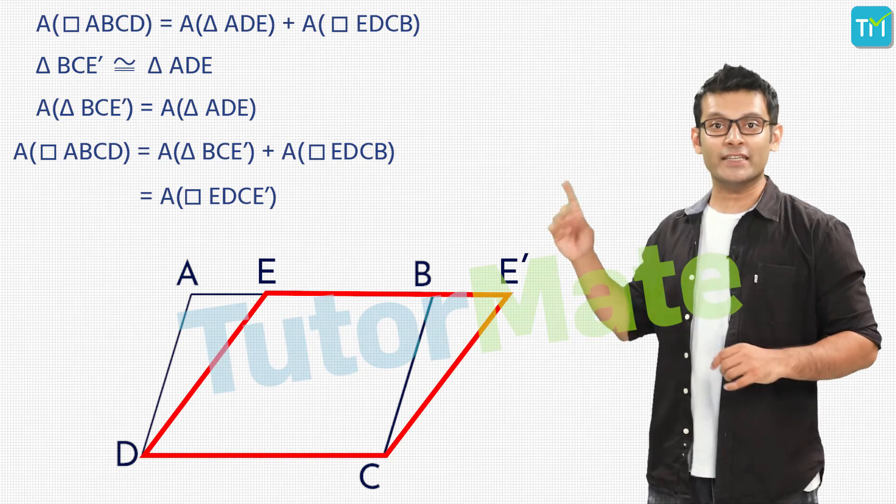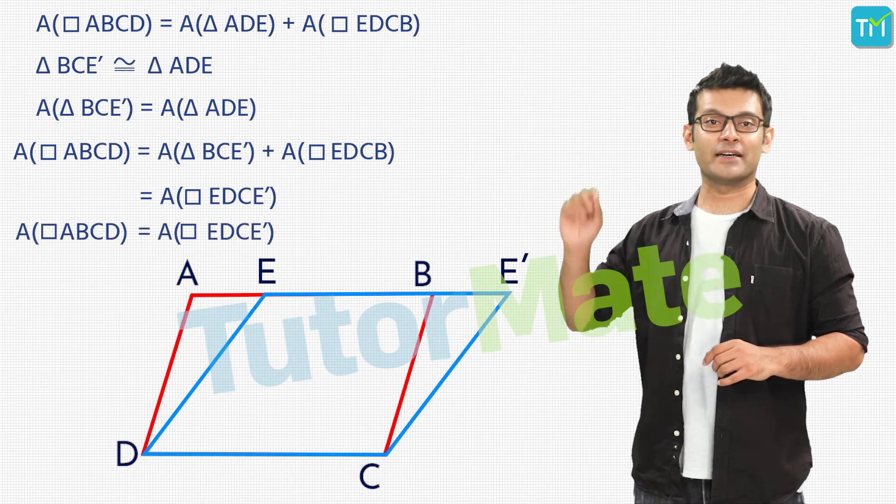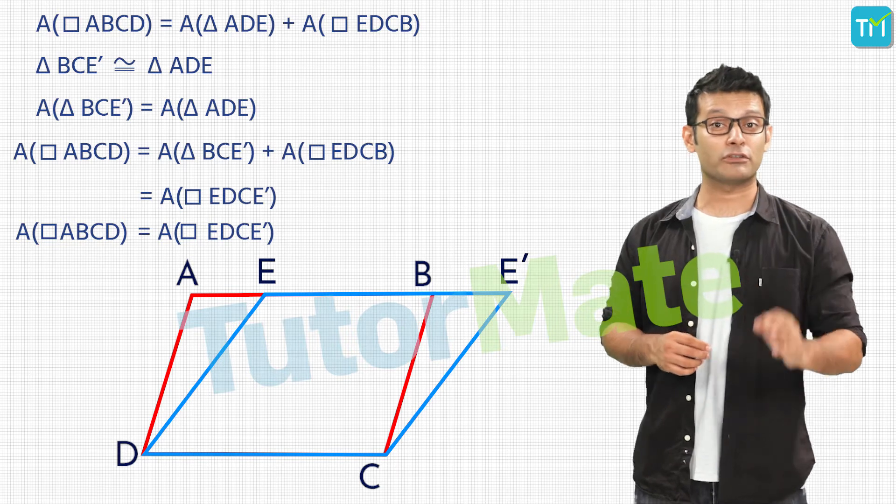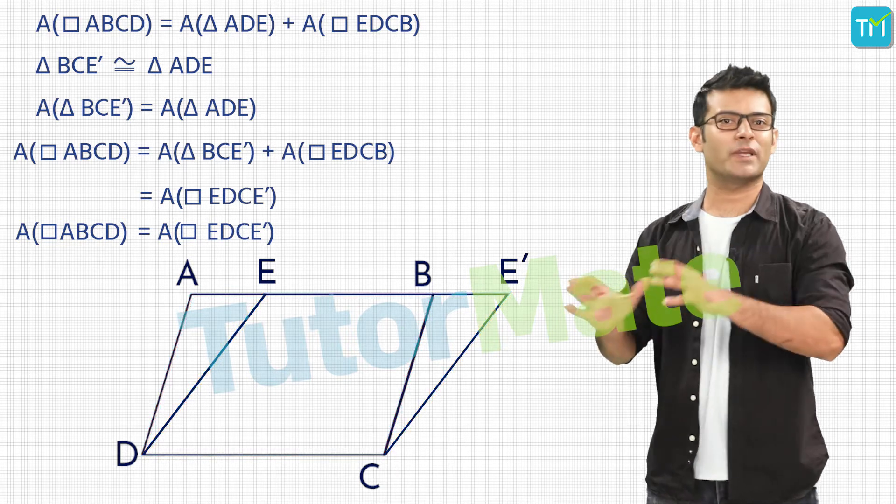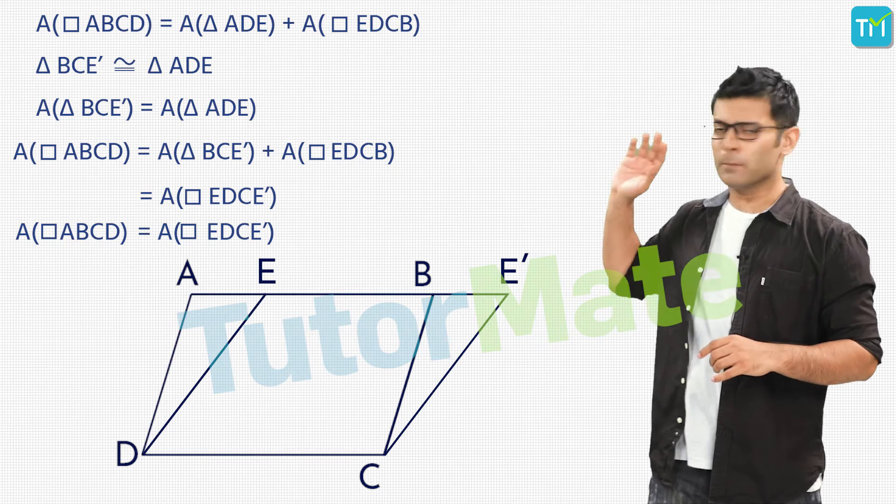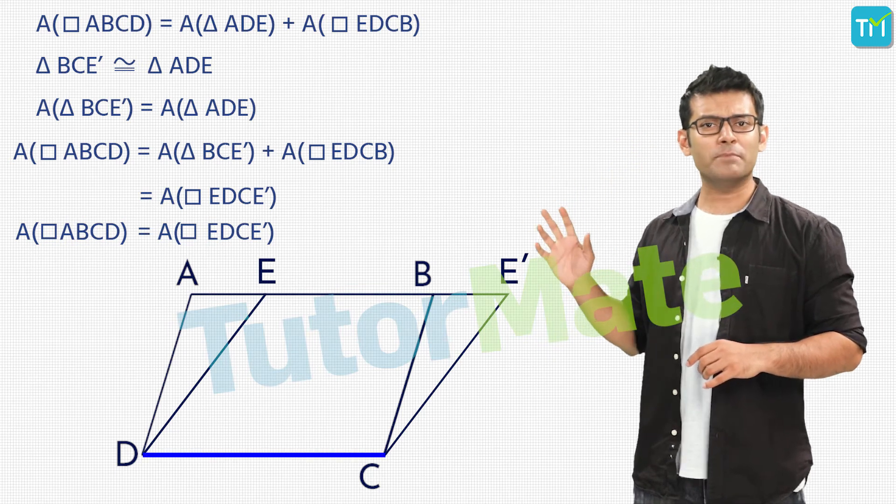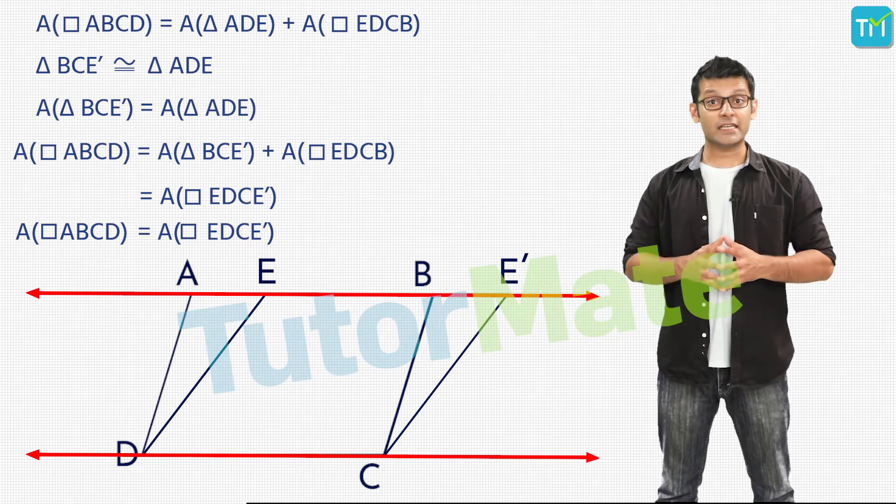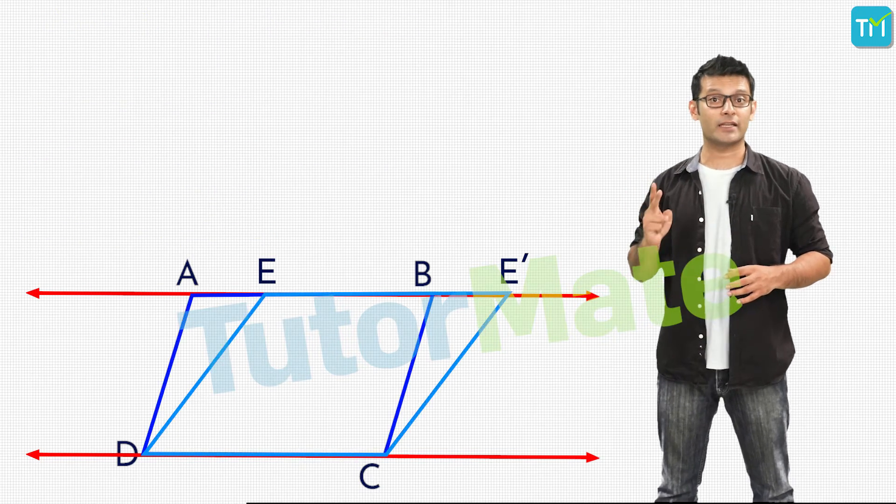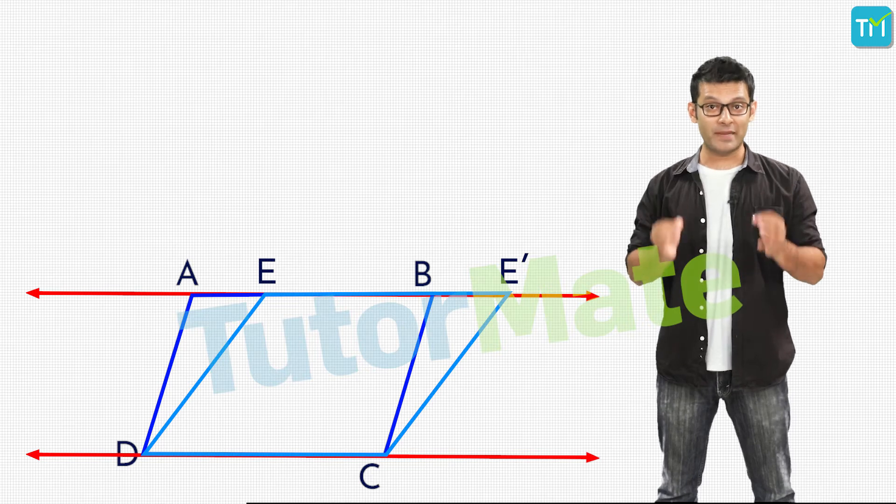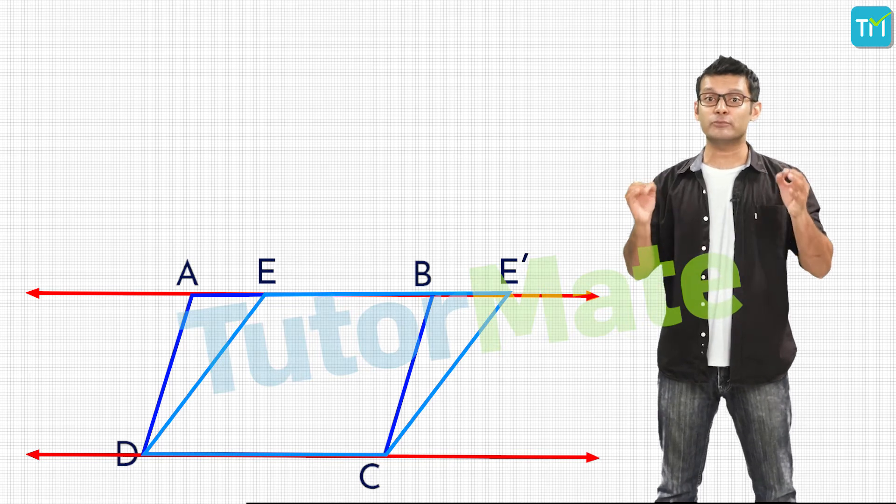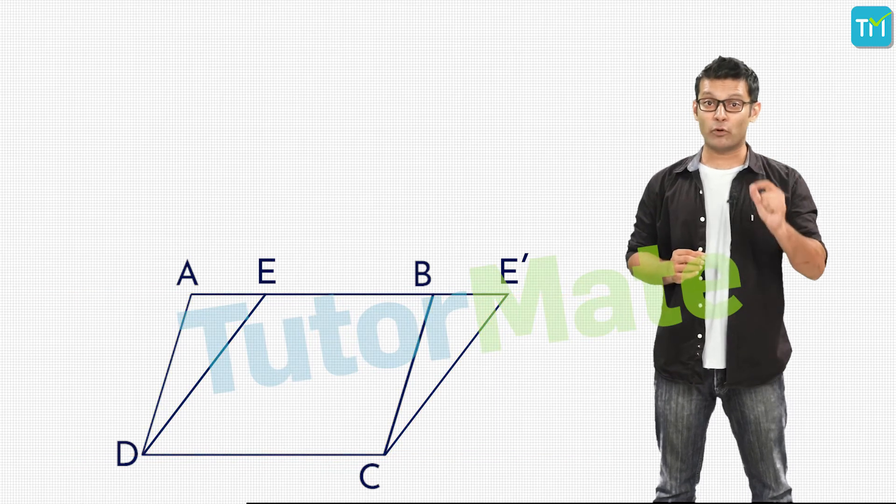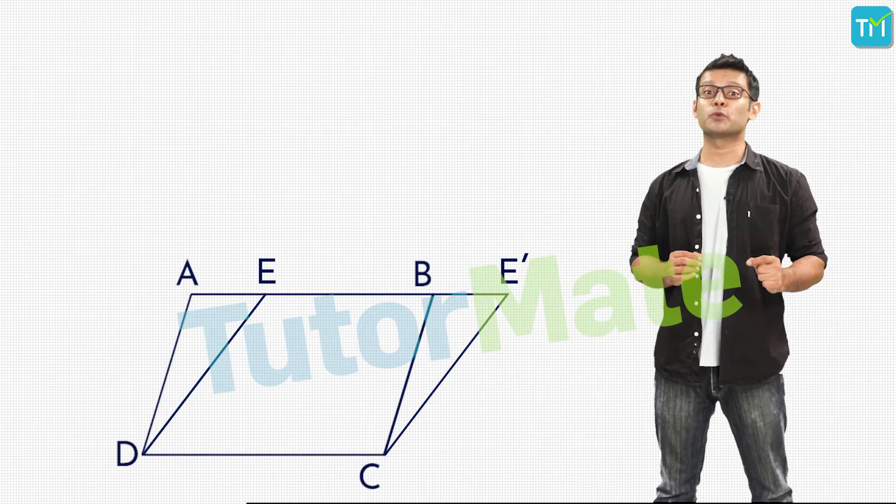Hence, we can conclude that the two figures have the same area. And what we have just observed is a very important property. Let's see what we have found out. Both of these figures have a common base and lie between two parallel lines. This leads us to the conclusion that the areas of two parallelograms that share a common base and lie between the same two parallel lines are equal. And this is a very important theorem which we can also prove theoretically.